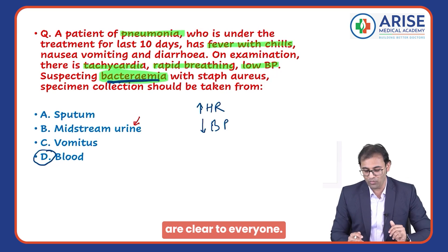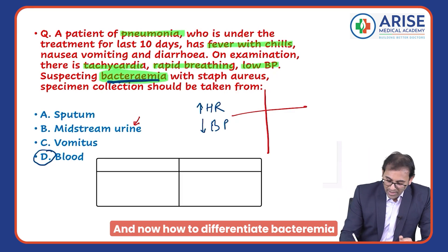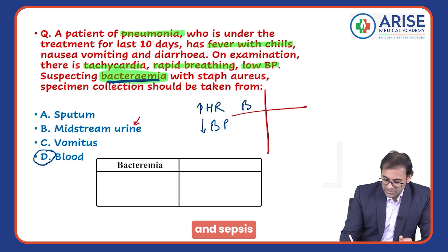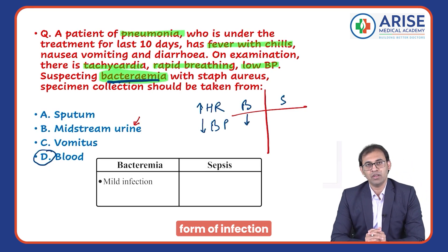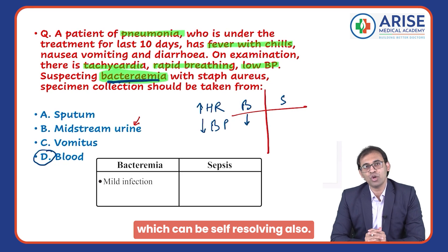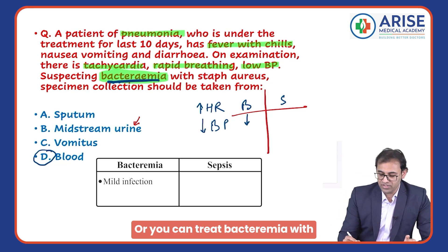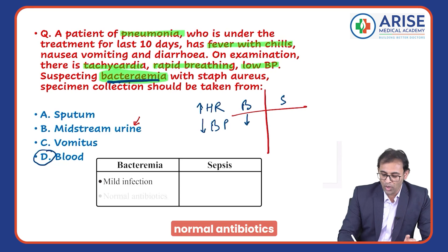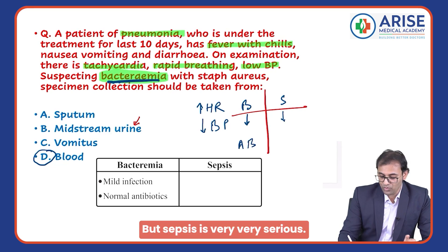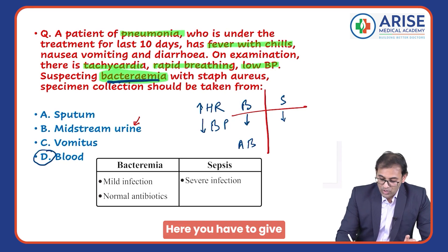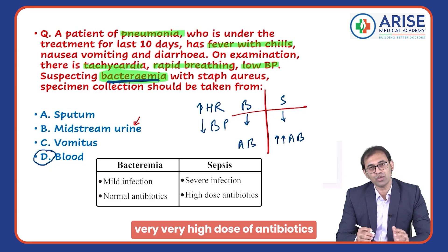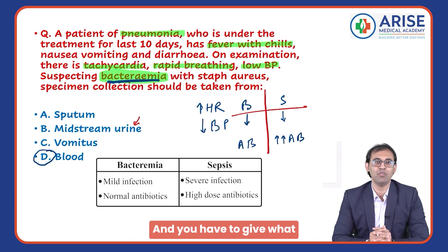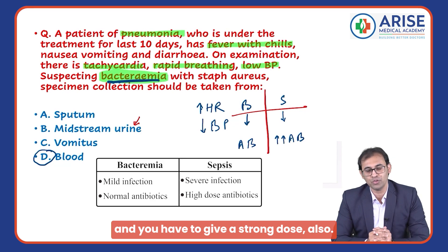Now, how to differentiate bacteremia and sepsis: bacteremia is a milder form of infection which can be self-resolving, or you can treat it with normal antibiotics. But sepsis is very serious — you have to give a very high dose of strong antibiotics.